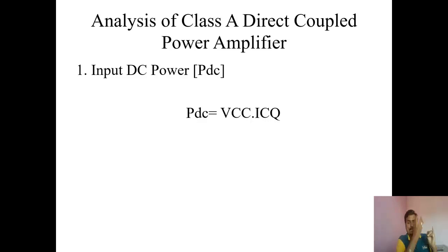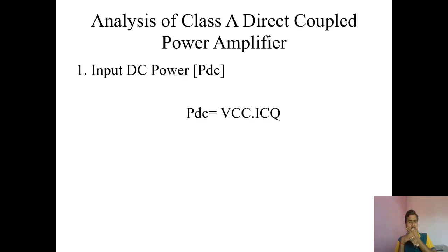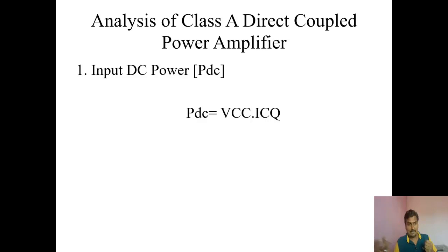The fourth parameter is power dissipation. In the process of taking input and generating output, there must be some wastage of power — that wastage is dissipation. In electronic circuits, power is generally dissipated in the form of heat. So the four parameters are: how much I am taking, how much I am generating, what is the efficiency, and what is the wastage.